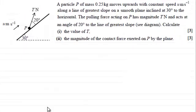Hi. Now what we've got here is a particle P of mass 0.25 kilograms and it moves upwards with constant speed of u meters per second along a line of greatest slope on a smooth plane inclined at 30 degrees to the horizontal.